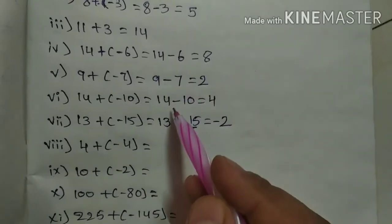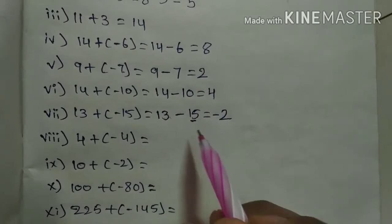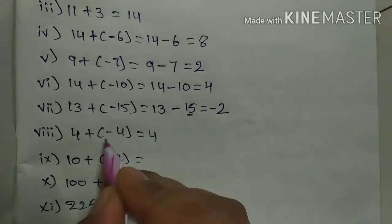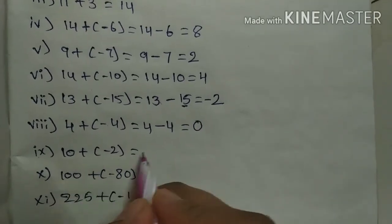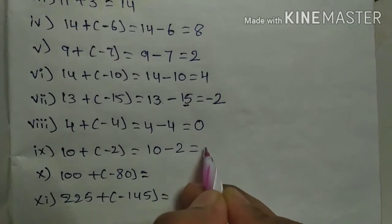In all the other problems, bigger numbers are having positive sign, so the answer is positive. See here: 4 plus into minus minus 4 is 4 minus 4, which is 0. Next, 10 plus into minus minus 2 is 10 minus 2.